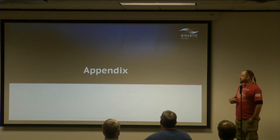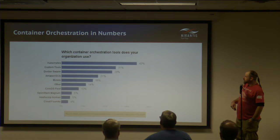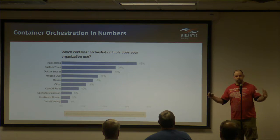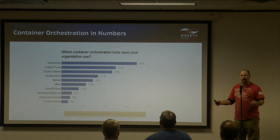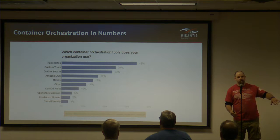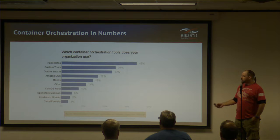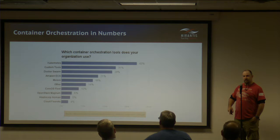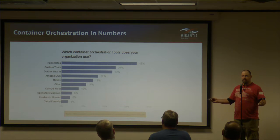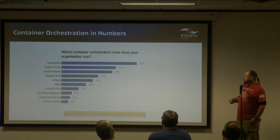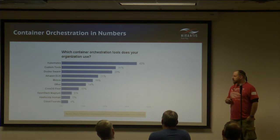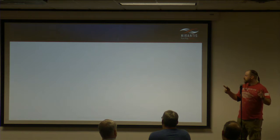The appendix shows a July poll on which orchestration tool organizations use: Kubernetes leads, followed by Docker Swarm, with many still using homegrown solutions. Mesos is further down. CoreOS Fleet and OpenStack Magnum are smaller but worth watching, especially as Magnum matures. Since Kubernetes currently wins, let's dive into that.